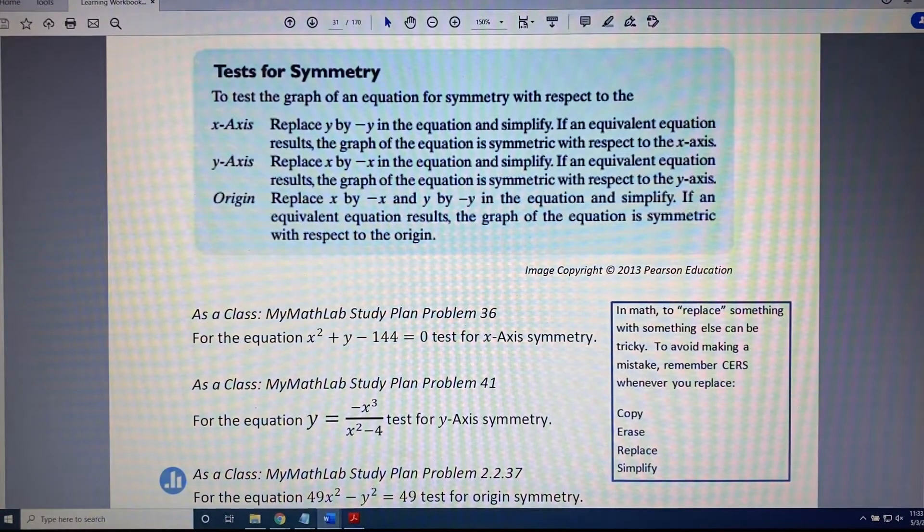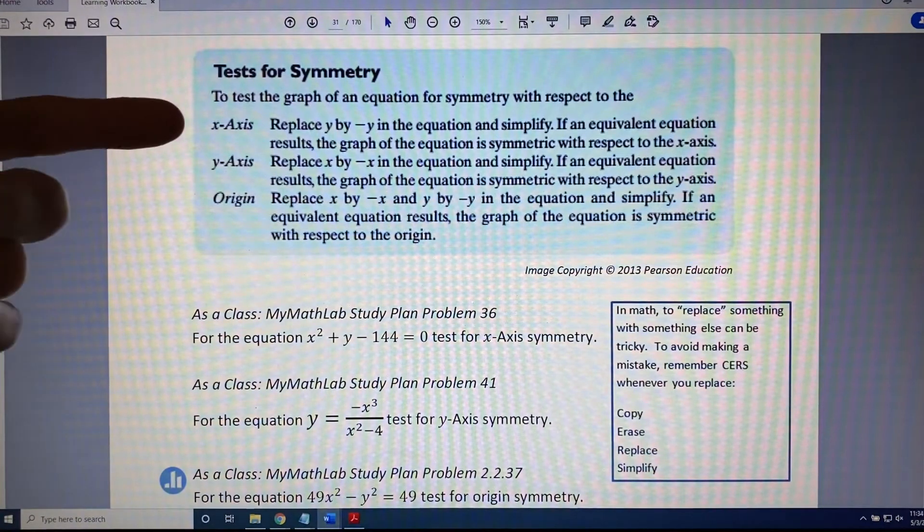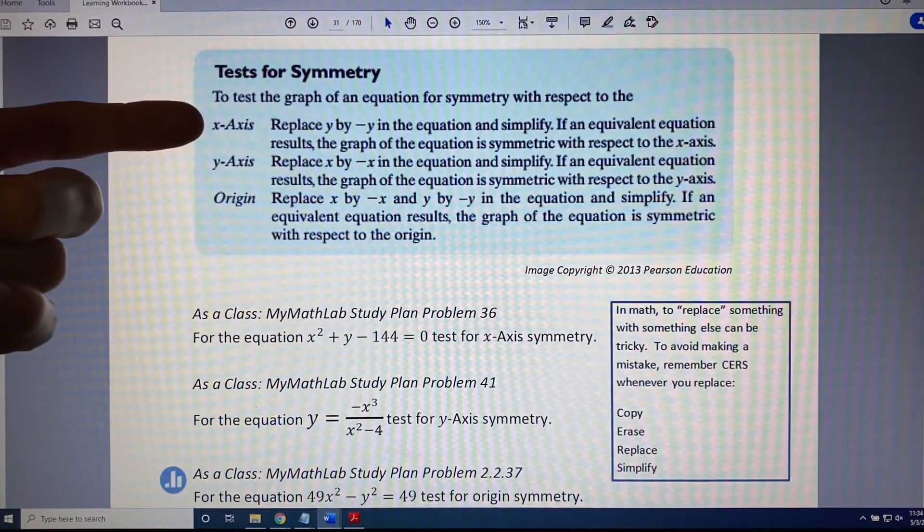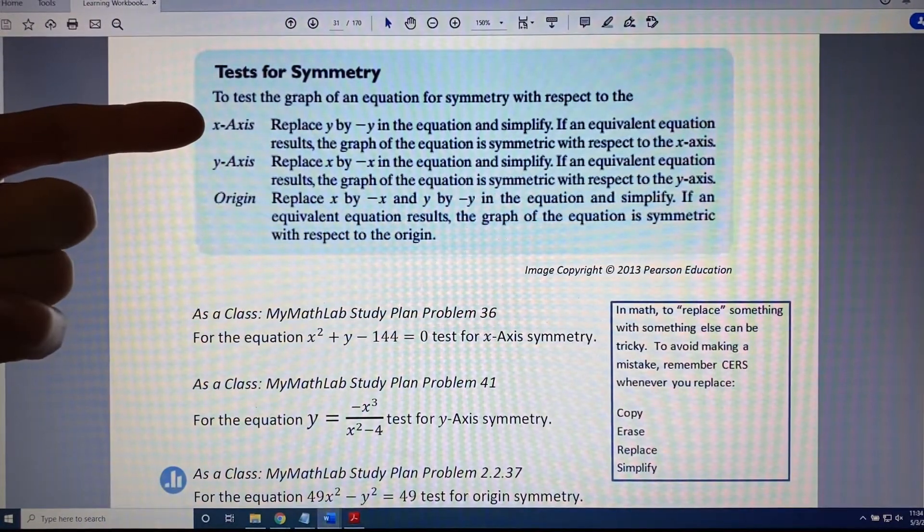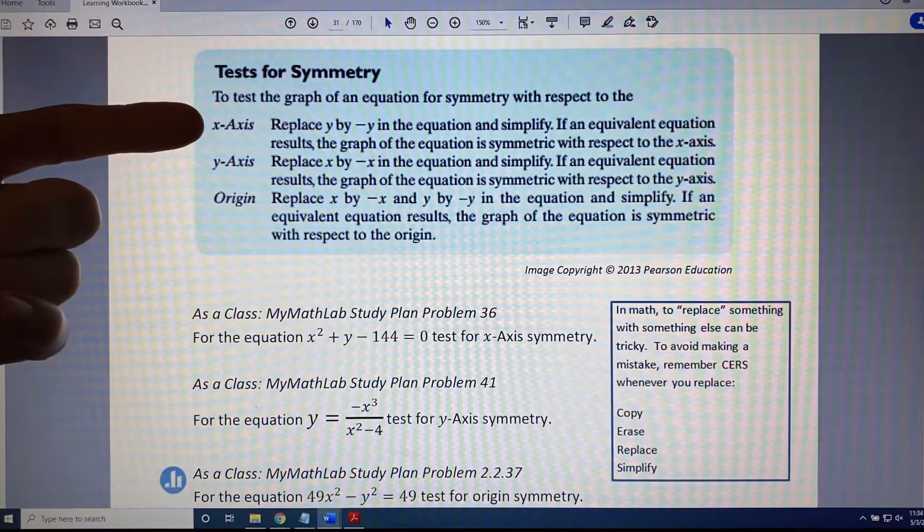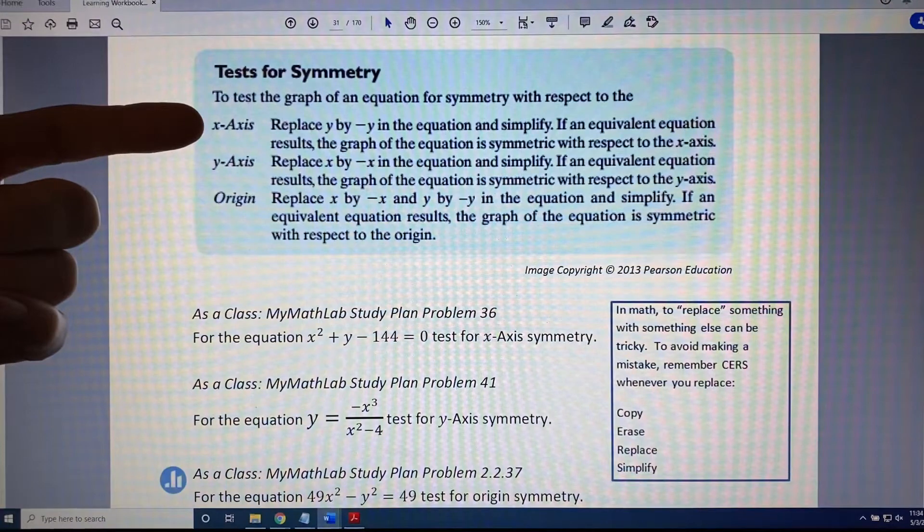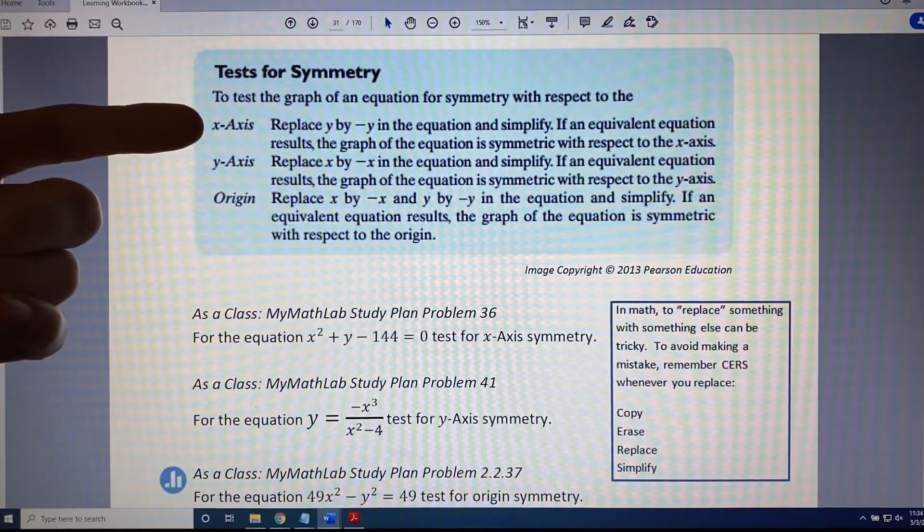Tests for symmetry. To test the graph of an equation for symmetry with respect to the x-axis, replace y by negative y in the equation and simplify. If an equivalent equation results, the graph of the equation is symmetric with respect to the x-axis. If not, then it isn't.